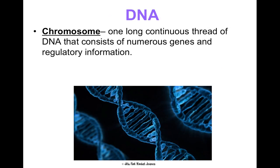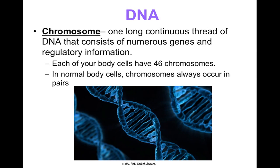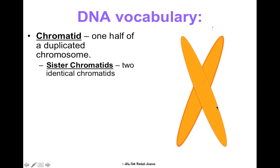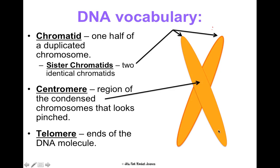Chromosomes are one long, continuous thread of DNA with numerous genes and all of your regulatory information. As a human, your body cells have 46 chromosomes — 23 pairs. You got 23 from your mom and 23 from your dad, and each chromosome could have thousands of genes on it. A chromatid is one half of a duplicated chromosome — after the S phase. When we talk about both halves, we call them sister chromatids: two identical copies of the same chromosome. The centromere is the region in the middle used to move chromosomes, and the telomere is the end of the DNA molecule.